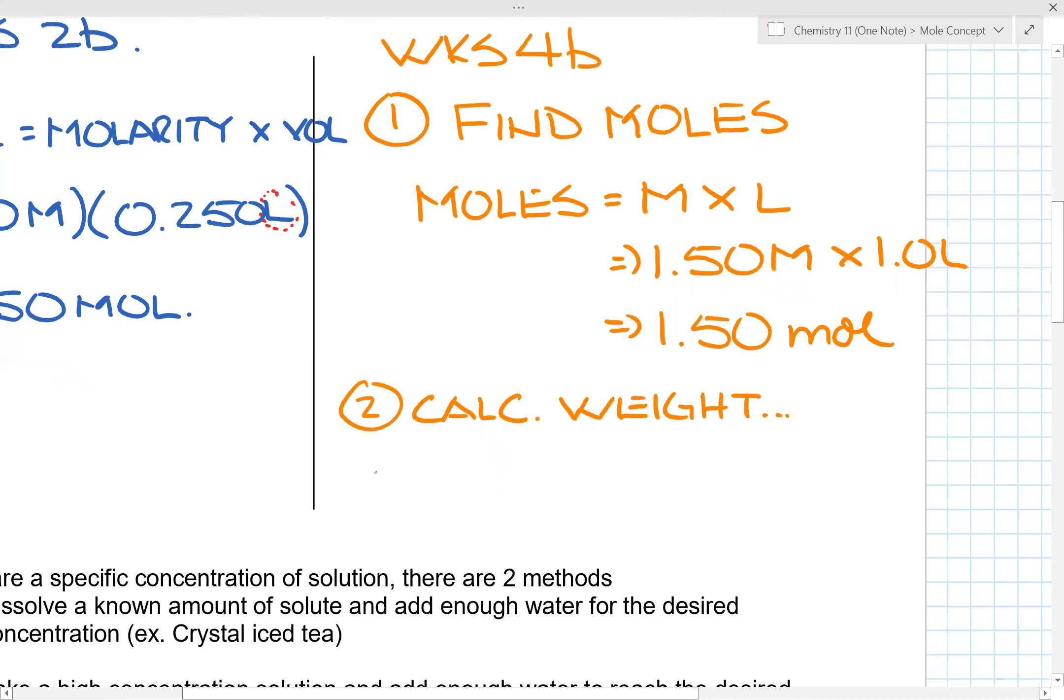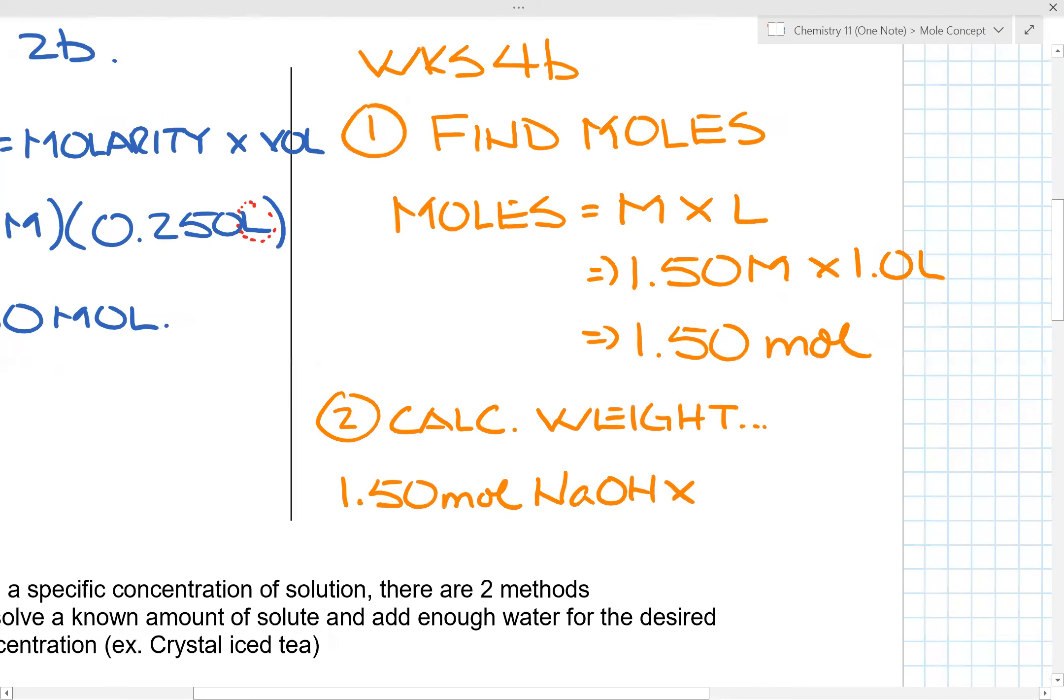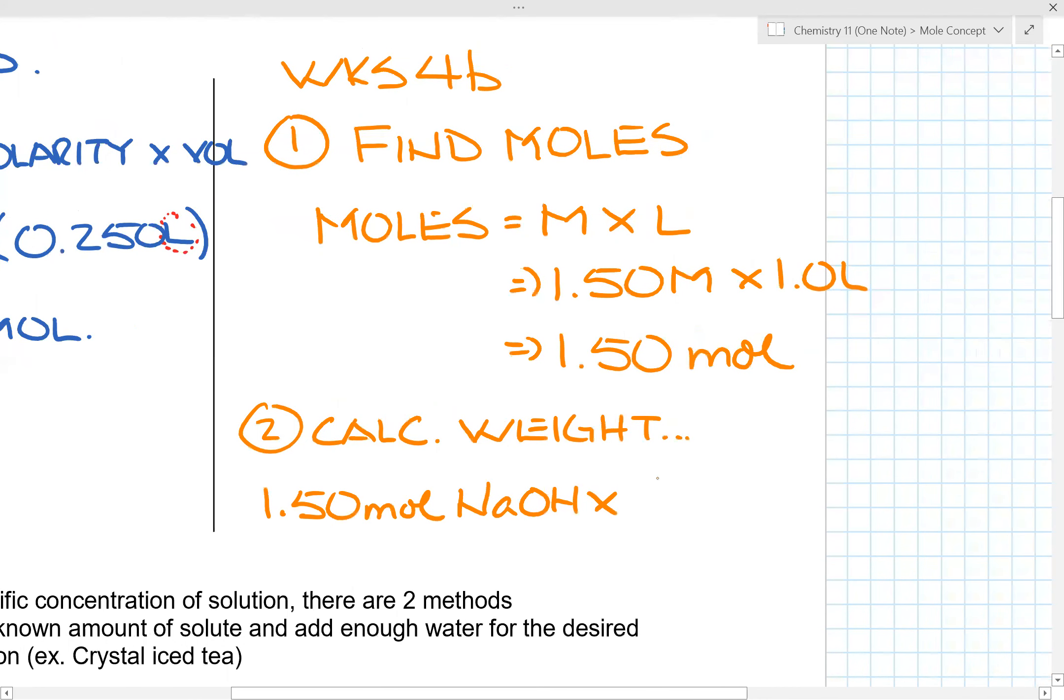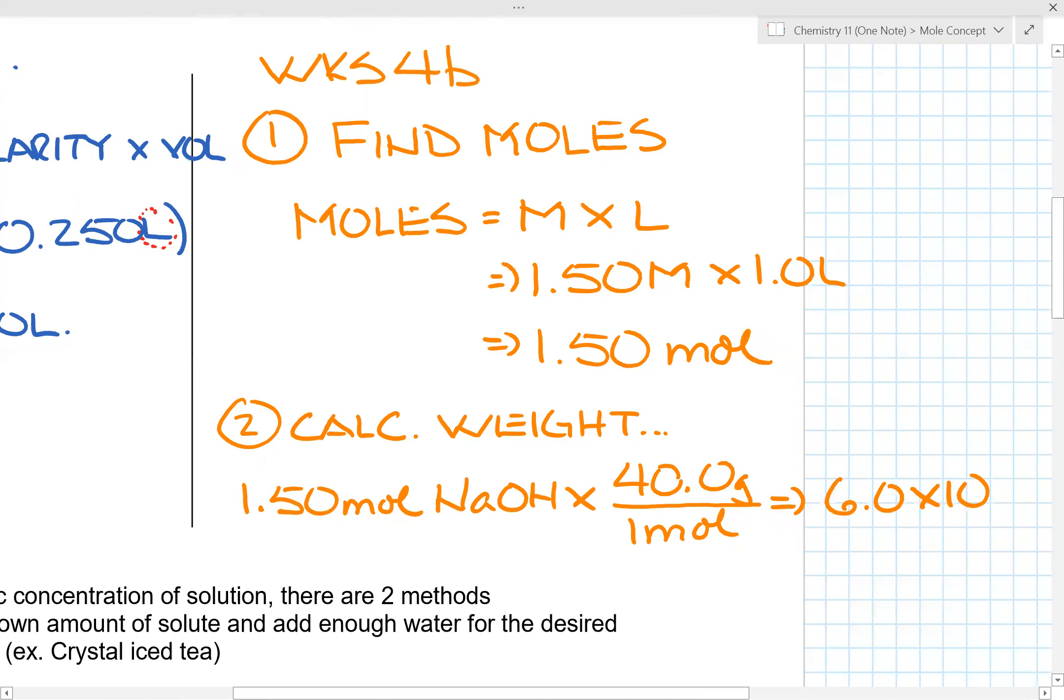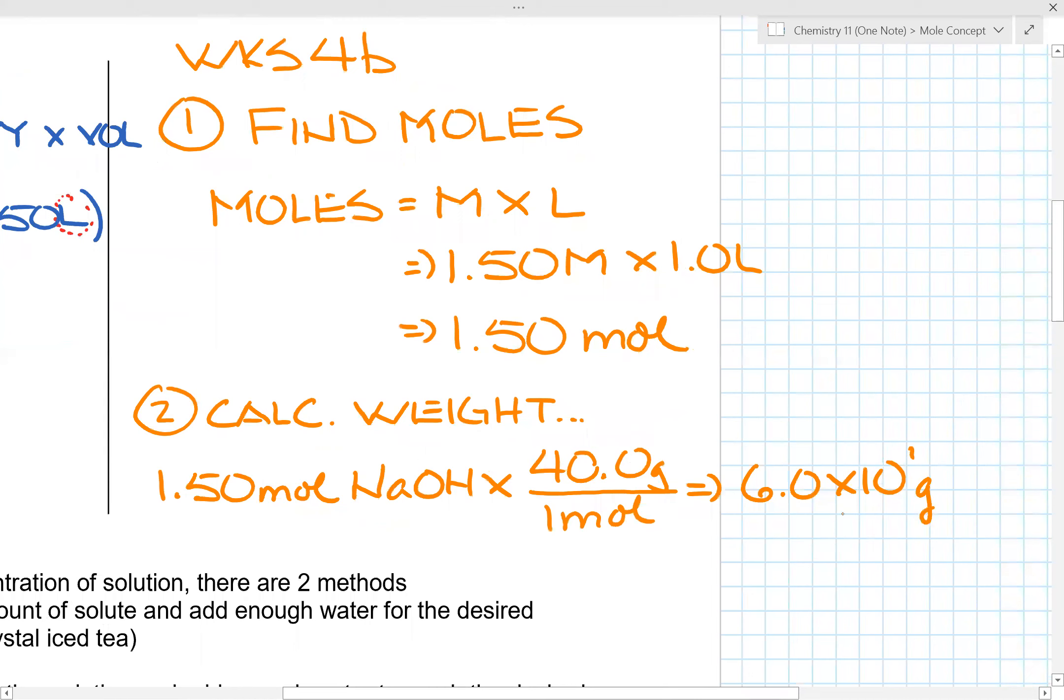What we do now is take the 1.50 moles of sodium hydroxide and multiply it by the molar mass of sodium hydroxide, which is 40.00 grams over one mole. That's how I get the answer of 6.0 times 10 to the 1 grams.